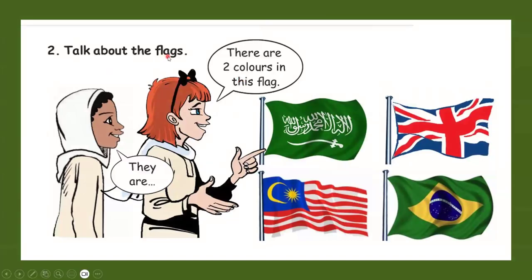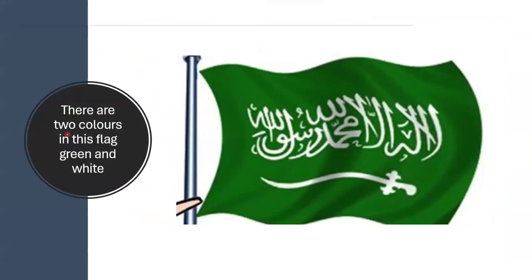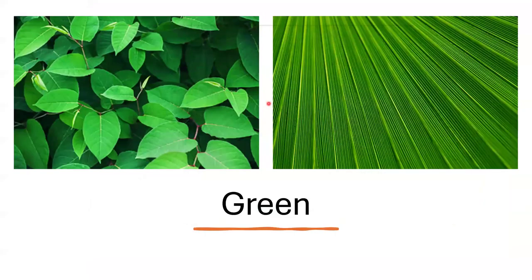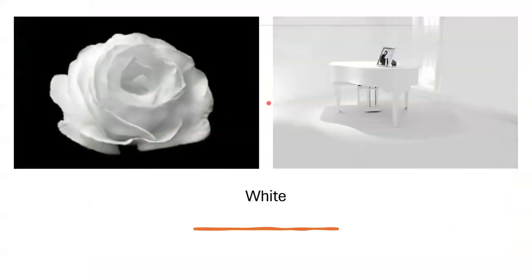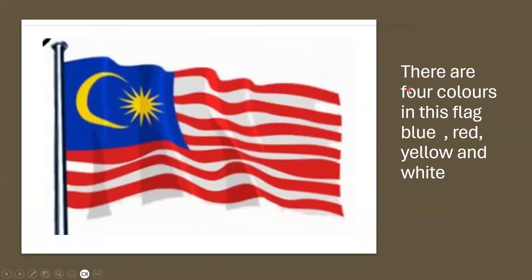Talk about the flags. There are two colors in this flag. Let us start talking about the flags. There are two colors in this flag: green and white. This flag has two colors — green and white. There are four colors in this flag: blue, red, yellow, and white.